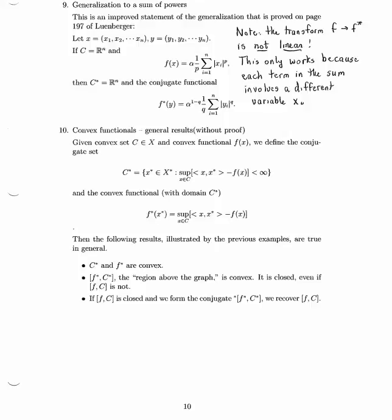The domain c star of the conjugate functional is everything in the dual space x star for which the supremum of x star acting on x minus f of x exists in the sense that there is some bound on this quantity that it doesn't diverge to plus infinity. And the convex functional f star of x star is that supremum provided we're in the domain where it exists.